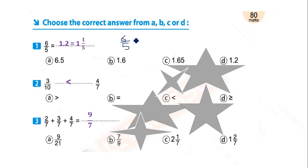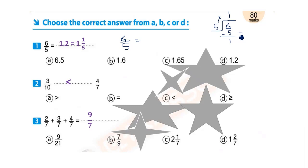To convert six over five into a mixed number: divide six by five. Six divided by five equals one; one times five equals five; subtract: six minus five equals one. Bring down — no extra number. So the result: write the same denominator, the quotient is next to the fraction, and the remainder is written on top.